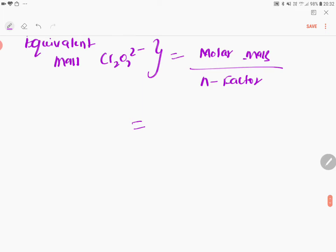The molecular mass of dichromate is 294, and the n-factor is 6. Therefore, you get 49 grams per equivalent. This is the equivalent mass of dichromate.